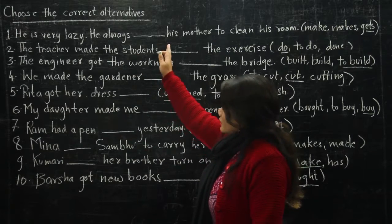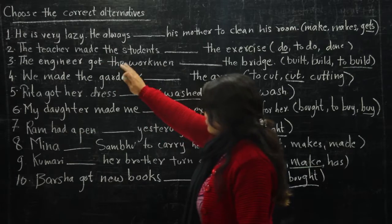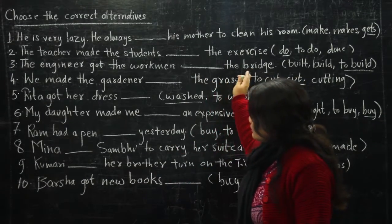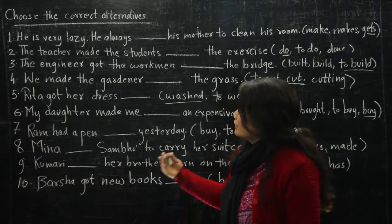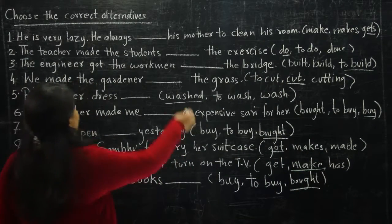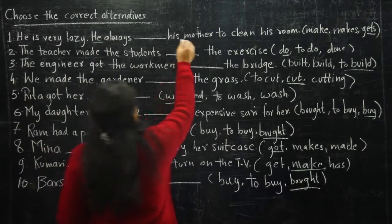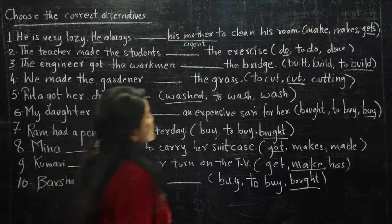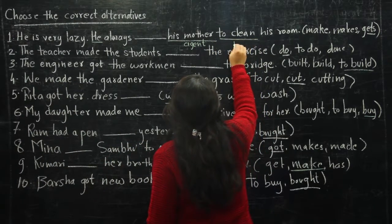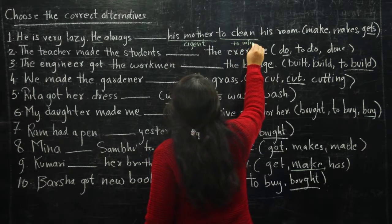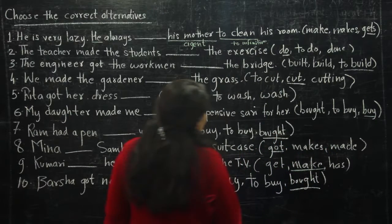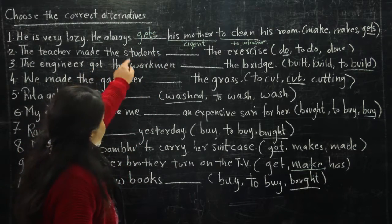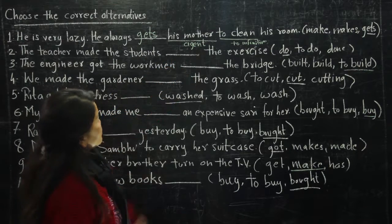Now let's do some examples. Choose the correct alternative. 'He is very lazy. He always __ his mother to clean his room.' The options are 'make,' 'makes,' or 'gets.' Here 'he' is the subject, 'his mother' is the agent (doer of the action), and 'to clean' is the to-infinitive. Since we need a causative verb and 'to infinitive' follows, 'gets' is the correct answer: 'He always gets his mother to clean his room.'